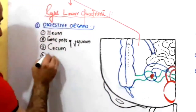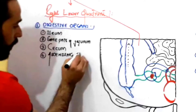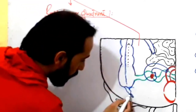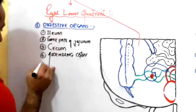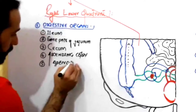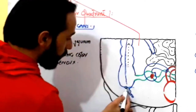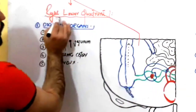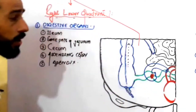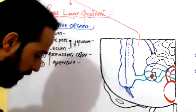Number four is the ascending colon, found in the right lower quadrant of your abdominal cavity. Then you can see a finger-like outgrowth — this is your appendix. So the appendix is found in the right lower quadrant. That is why we divide the abdominal cavity into different quadrants. These are the digestive organs found in the right lower quadrant responsible for digestion of food.